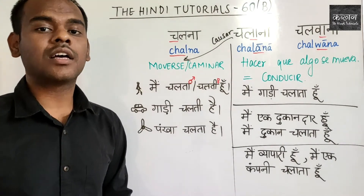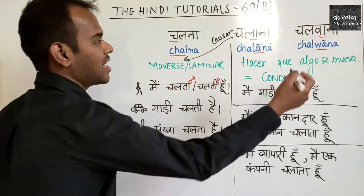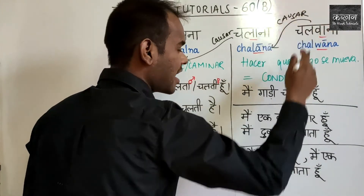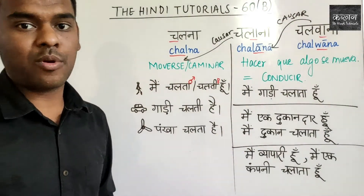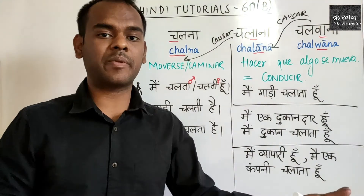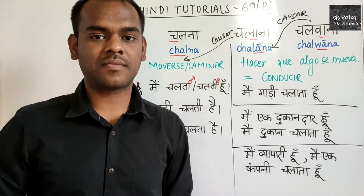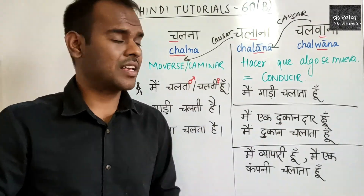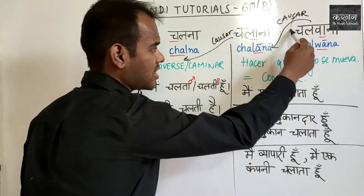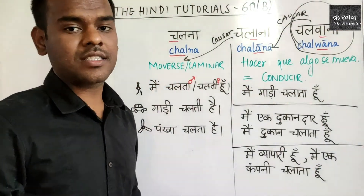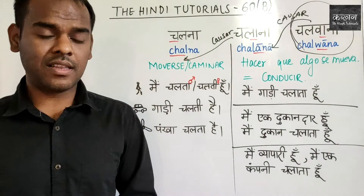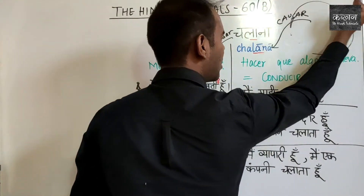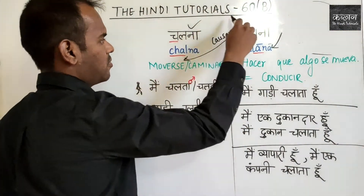El tercero es chalvana. El significado de chalvana es hacer que alguien conduzca — causar el segundo verbo. Por ejemplo, yo estoy diciendo a otra persona que conduzca el taxi. Sin embargo, esta forma no se usa tanto y es algo avanzado para nuestro nivel. No vamos a aprender esta tercera forma; aprenderemos solo las dos primeras: chalna — moverse, y chalana — conducir.